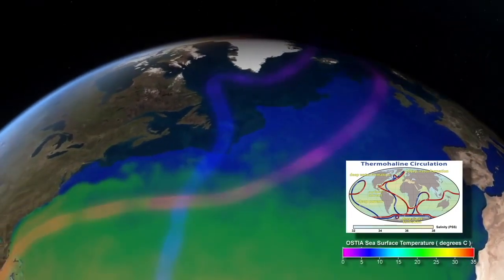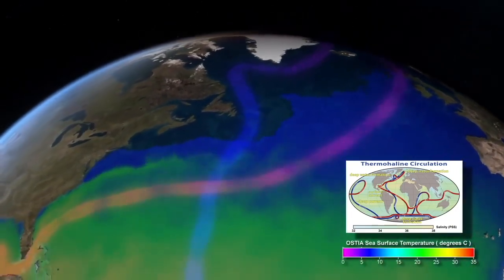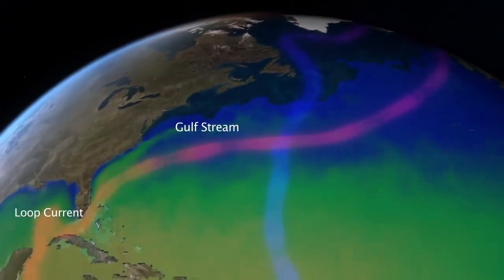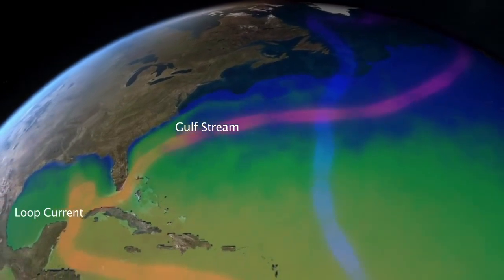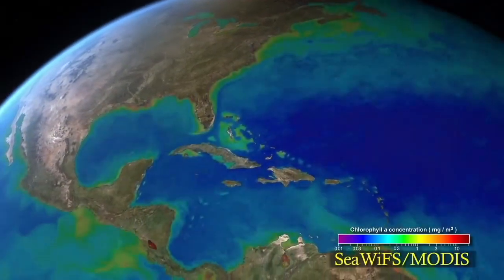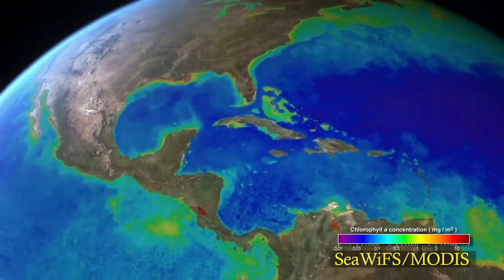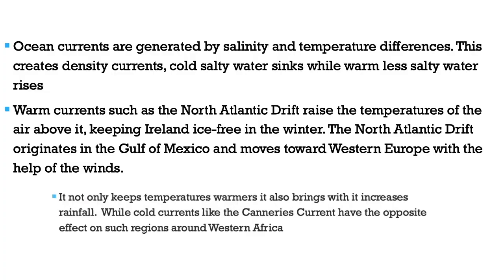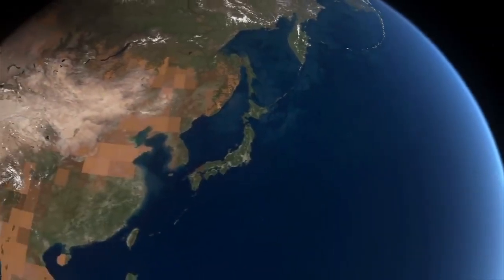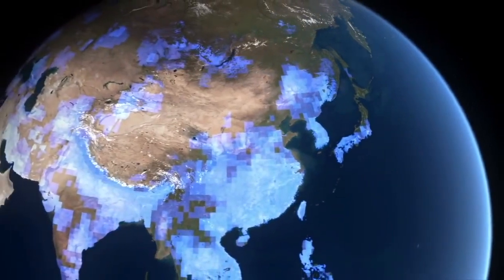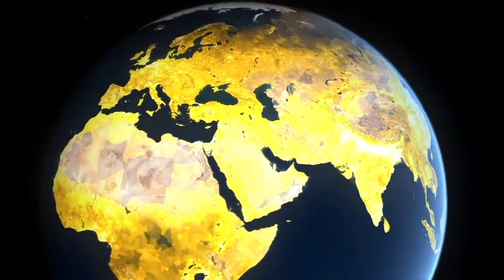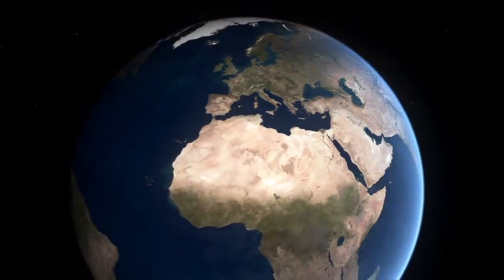When cold air meets the warm air that has been warmed by the North Atlantic Drift, you get two air masses meeting, the warm air is forced to rise, and condensation and precipitation occur. Cold currents, such as the Canaries current, have the opposite effect on regions like West Africa — the Canaries current keeps Western Africa a lot drier than it would otherwise be.